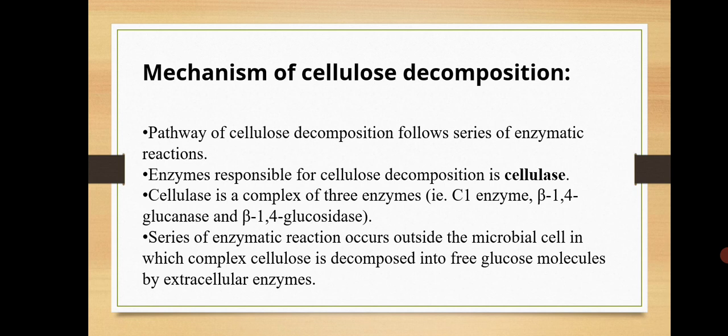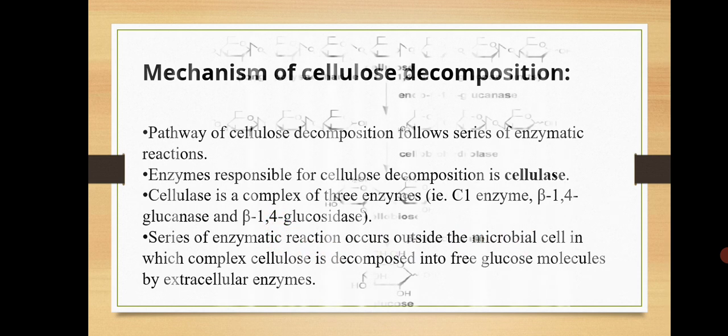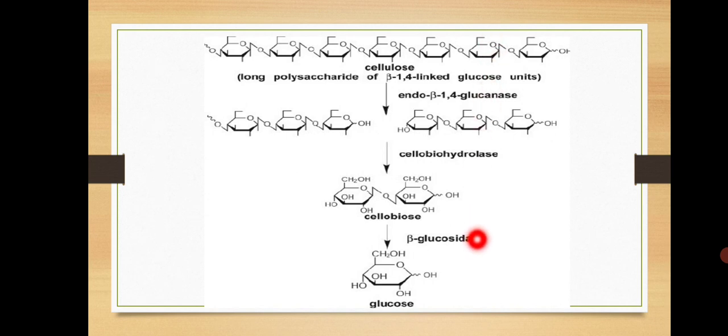What is the mechanism behind cellulose degradation or decomposition? It is a very simple mechanism — there is involvement of enzymes. Different enzymes play different roles and they break the chain of cellulose into single glucose units. The enzymes involved include C1 enzyme (cellulase), beta-1,4 glucanase, and beta-1,4 glucosidase. These are the three enzymes involved in the breakdown of cellulose. So let's start with the steps of cellulose degradation. This is the long polysaccharide chain linked by beta-1,4 glycosidic bond, with the flipped arrangement.